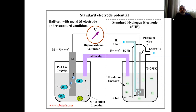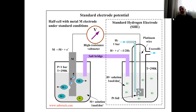This is the standard setup — it has to be one molar, the pressure should be one bar, and the temperature should be room temperature, which is 298 Kelvin. In scientific literature, we always need to use Kelvin instead of Celsius. Here is the salt bridge, and we get a voltage. Why? Because there is a driving force between the two compartments.